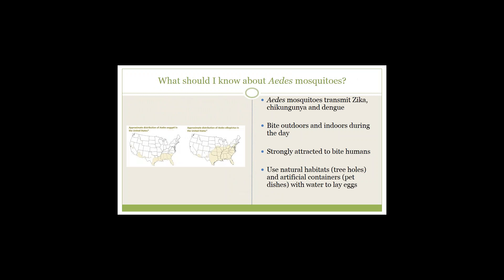What should you know about Aedes mosquitoes? Aedes mosquitoes transmit Zika, chikungunya, and dengue. They are outdoor and indoor daytime biters and are strongly attracted to bite humans. These mosquitoes use both natural habitats and artificial containers to breed. The map shown illustrates the distribution of two different Aedes mosquitoes in the United States: Aedes aegypti and Aedes albopictus. Currently, only Aedes aegypti is known to spread Zika.